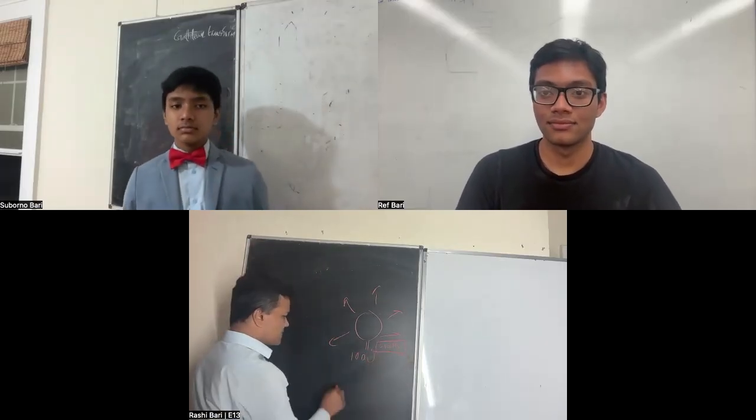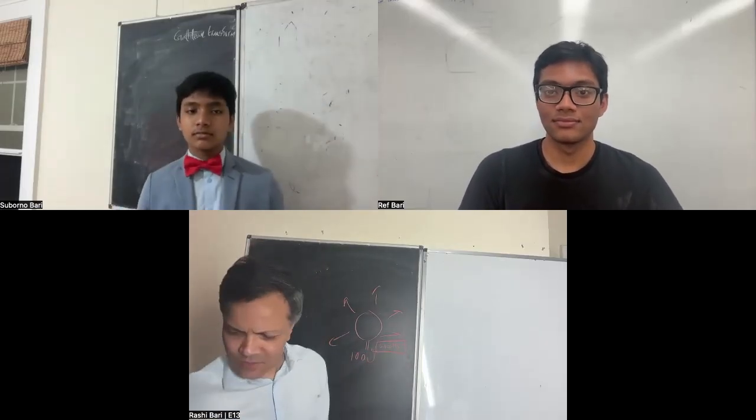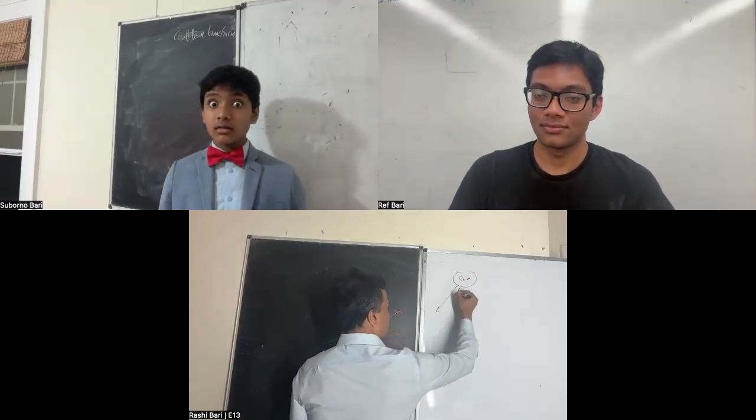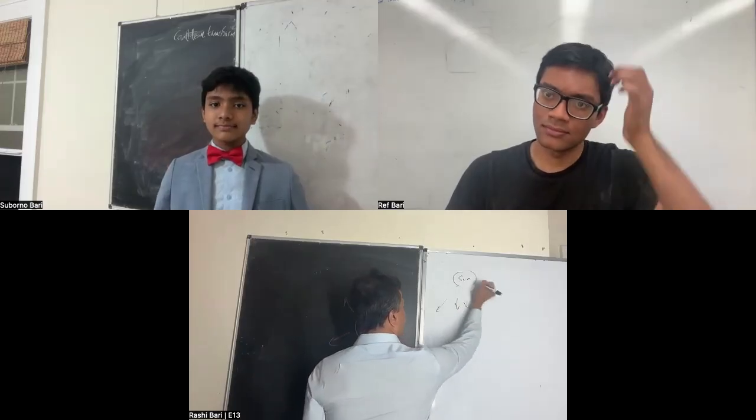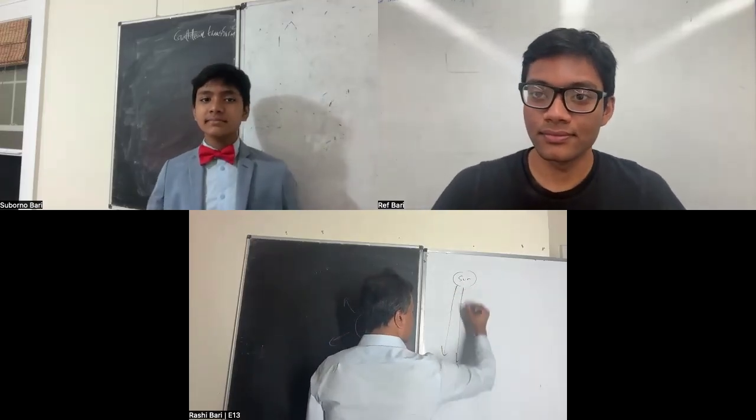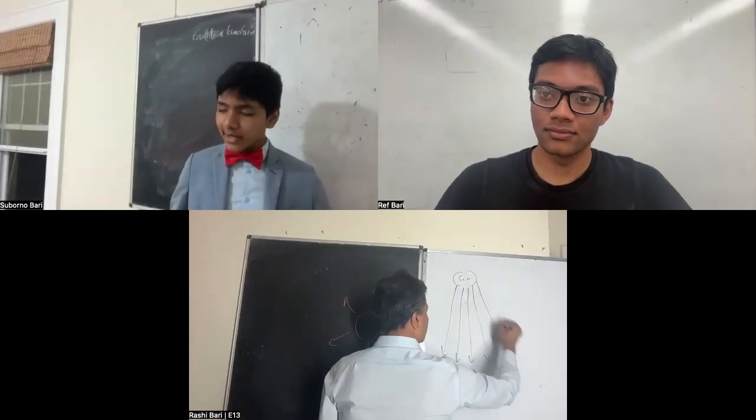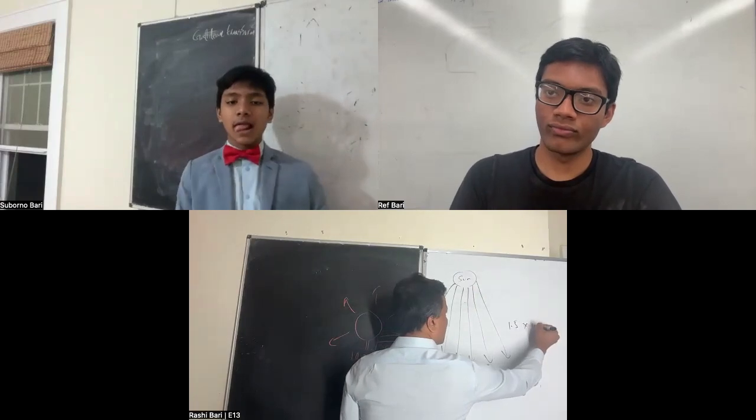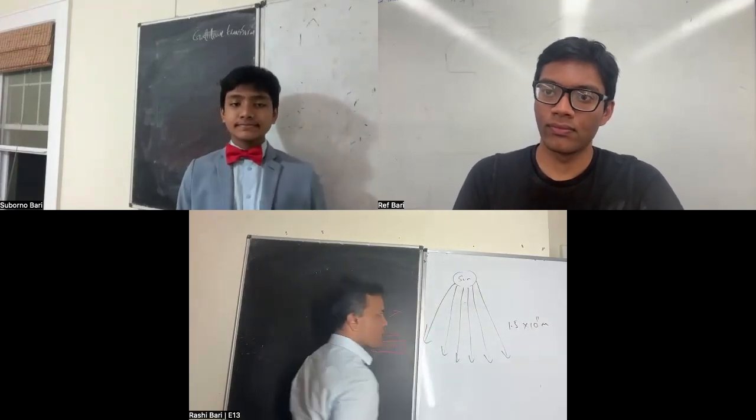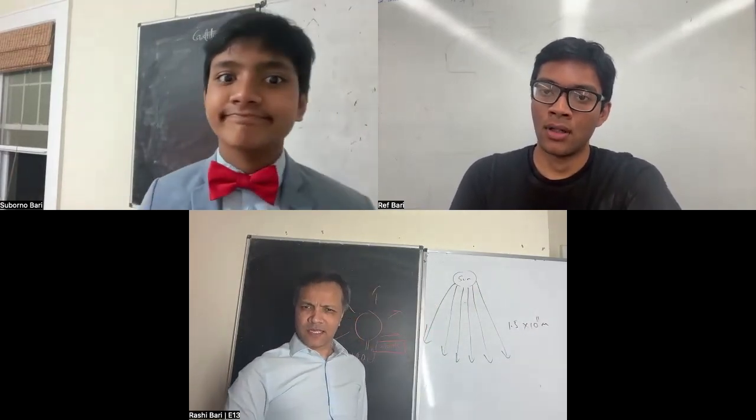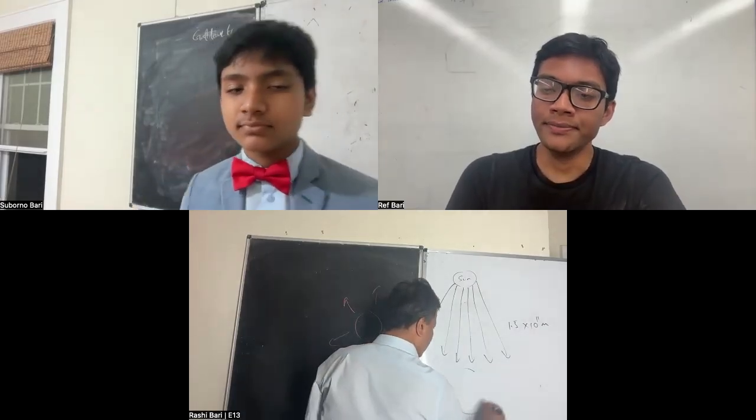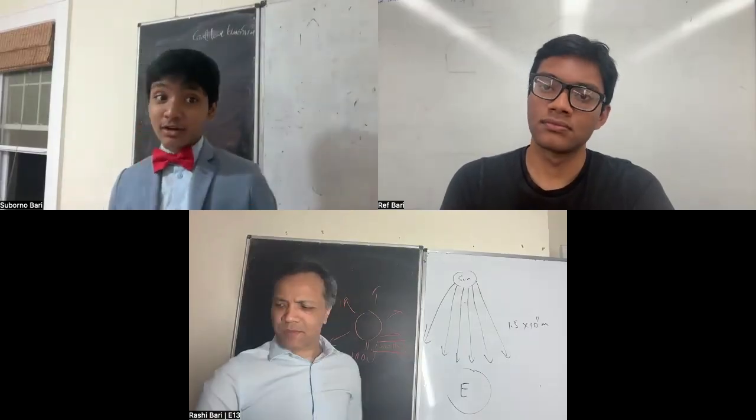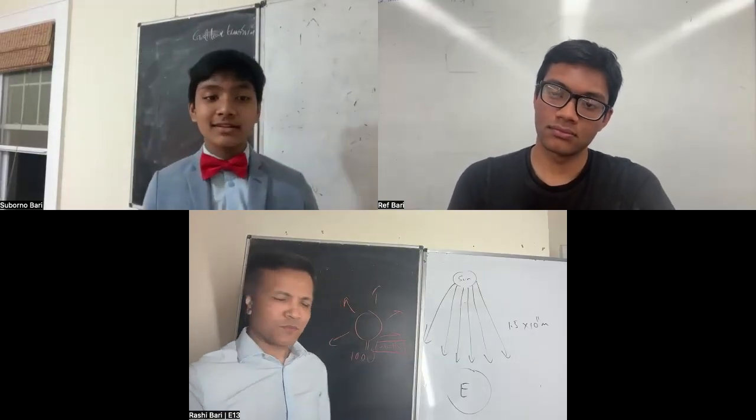The light bulb, let's say it is 100 watt. If it is sun, for example, let's talk about sun. If someone is standing 1.5 times 10 to 11 meter away from the sun, that means you are standing on the earth. No, it could also mean you're standing anywhere in earth's orbit. Probably.